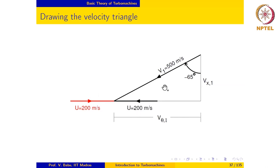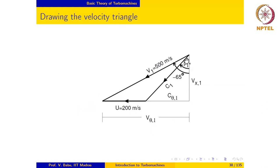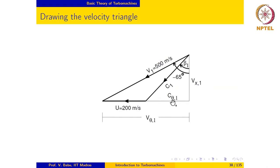We can now proceed to complete the inlet velocity triangle: c1 plus u equals v1. It can also be seen that the inlet blade angle β1 is going to be a negative number because v1 is located in the clockwise direction from the reference direction. The segment c_θ1 is identified, and note that cx1 equals vx1.